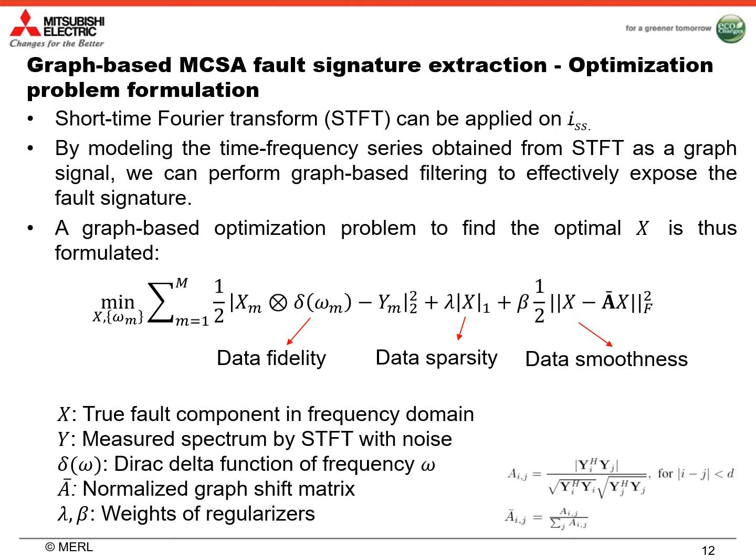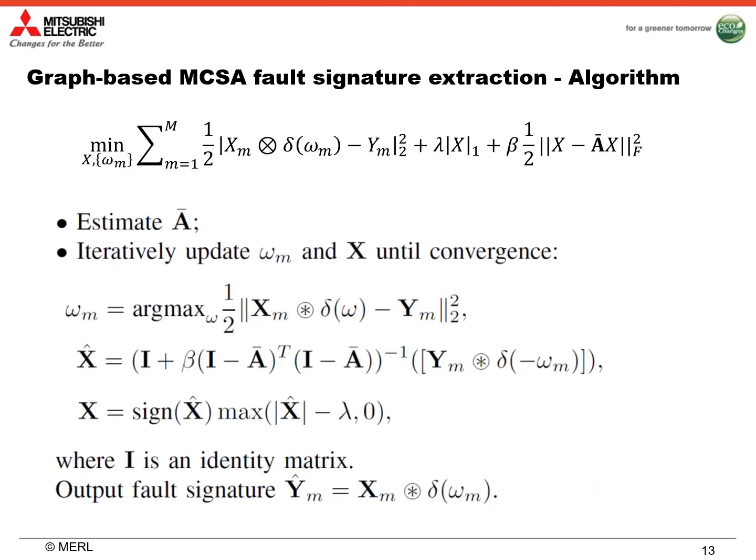To solve this optimization problem, we first estimate the graph shift matrix A-bar, which can be estimated using the measured spectrum Ym of the m-th time window. Then we iteratively update omega_m of the m-th time window and X until convergence. Given X, omega can be updated using this equation, and given omega_m, X can be updated using the following two equations. After convergence, we can output the fault signature Ym-hat.